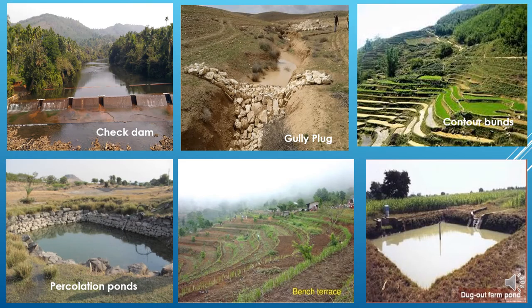Here we have shown a picture which represents various types of watershed management practices like check dams, gully plugs, contour bunds, percolation ponds, bench terracing, and dugout farm ponds.